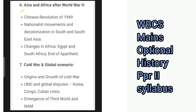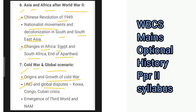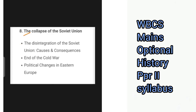Then we have the section on Asia and Africa after the Second World War, covering the Chinese Revolution of 1949, nationalist movements and decolonization in South and Southeast Asia, changes in Africa, Egypt and South Africa, end of apartheid. Then cold war and global scenario: origins and growth of cold war, UNO and global disputes including Korea, Congo, Cuban crisis, emergence of the third world and NAM. The last portion covers the collapse of the Soviet Union — disintegration of the Soviet Union, causes and consequences, end of the cold war, and political changes in Eastern Europe.